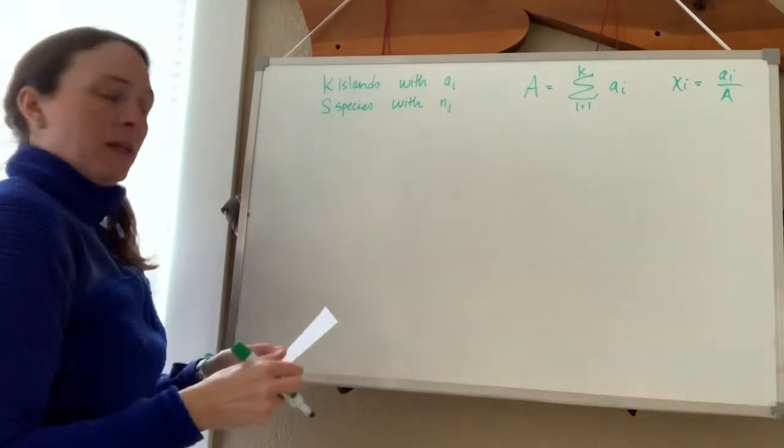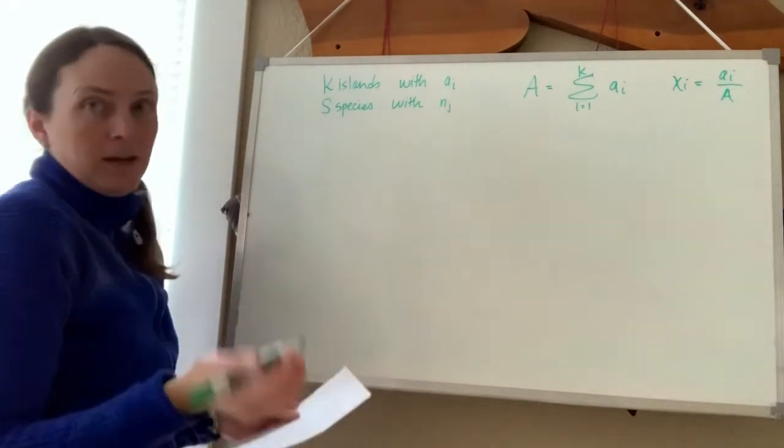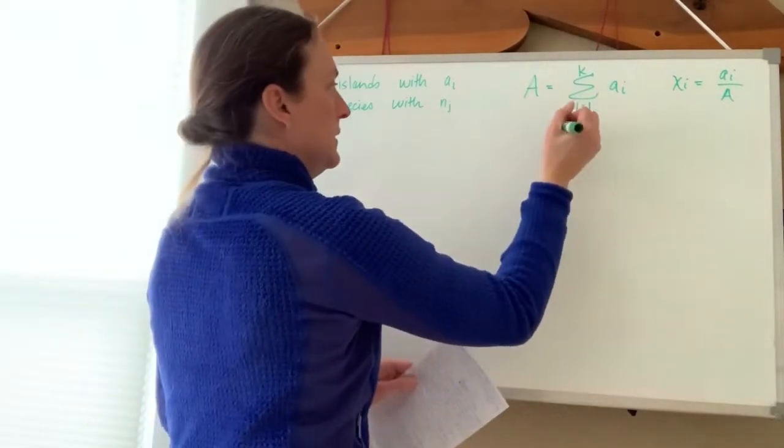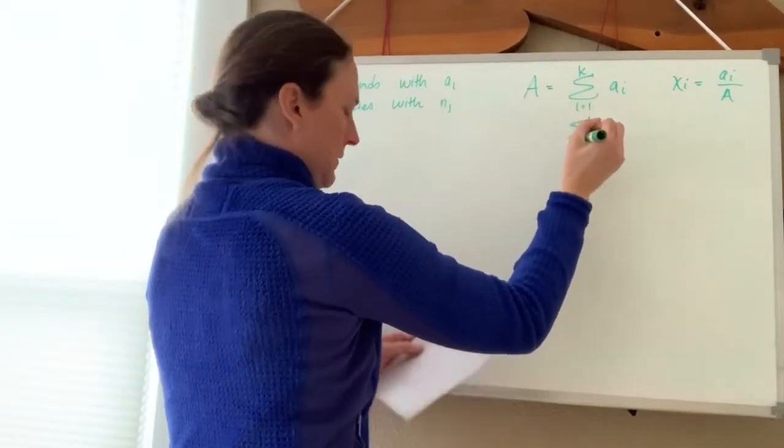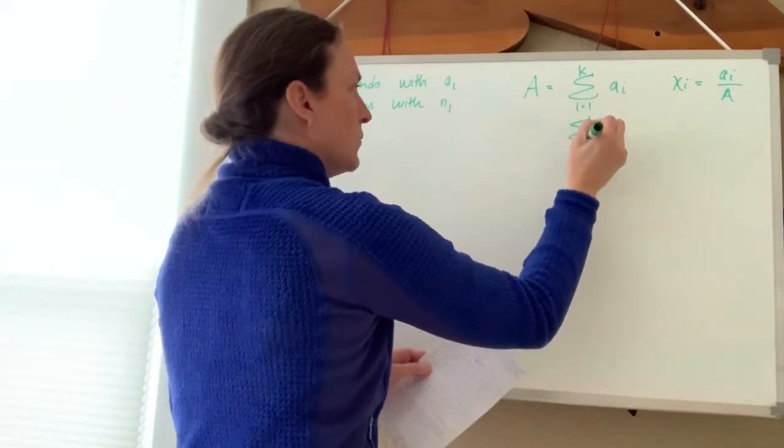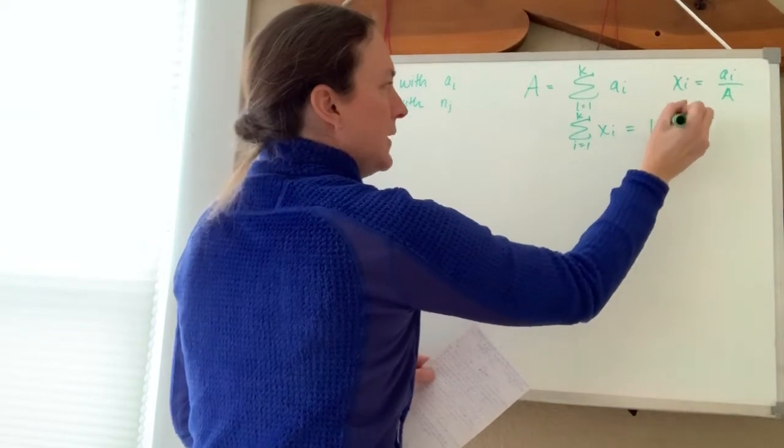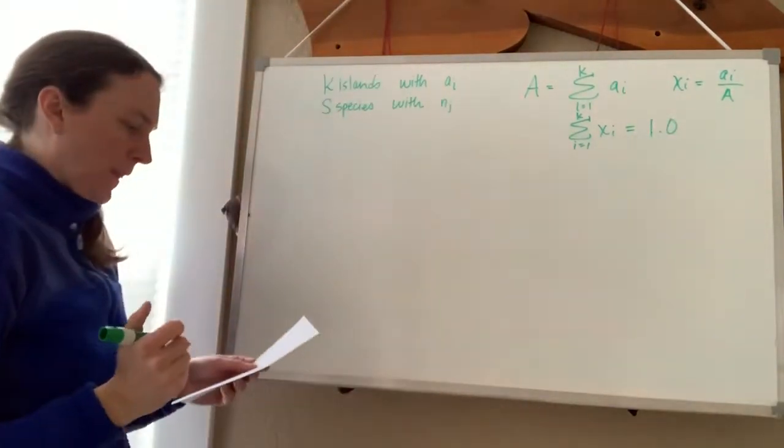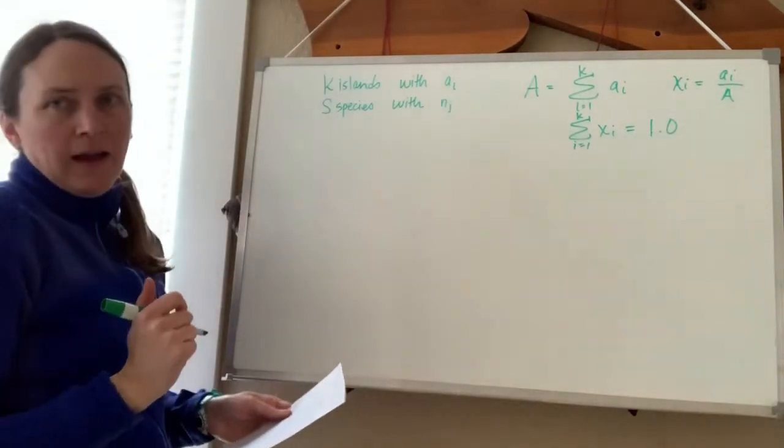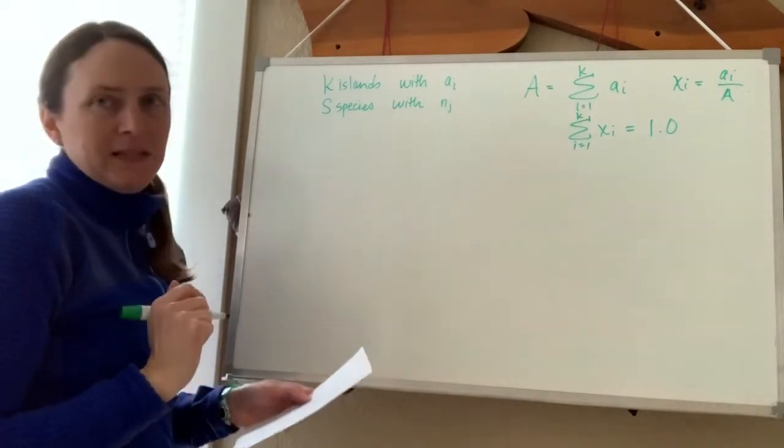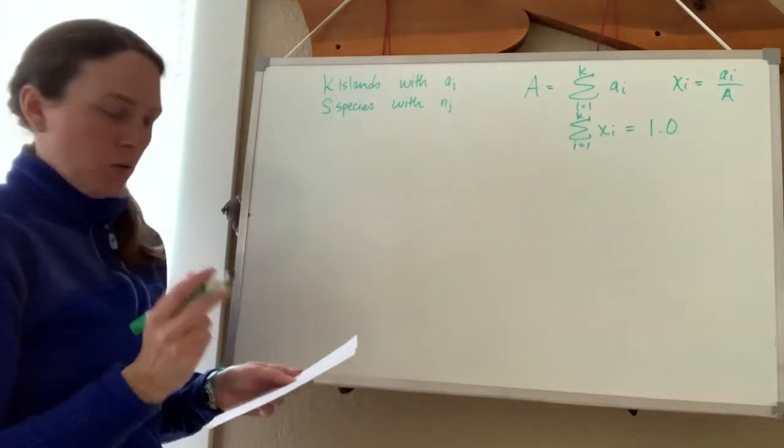Then if we wanted to add up all of those x_i's, we would get the sum from i equals 1 to k of every x_i, and that's going to equal 1. x_i is also the probability that a random individual will intercept an island of size a_i.